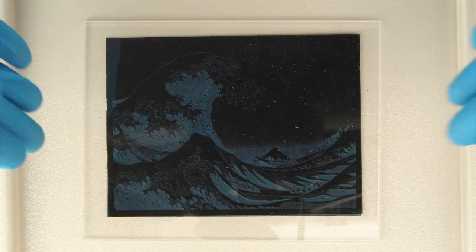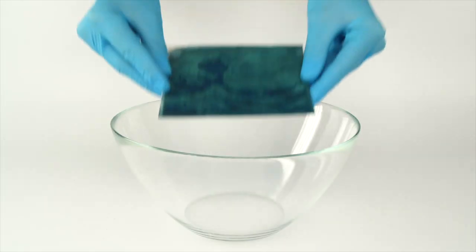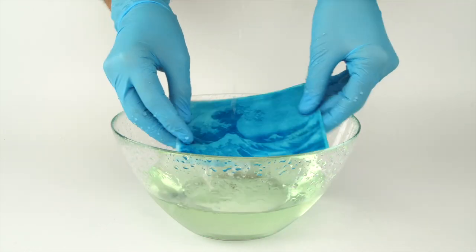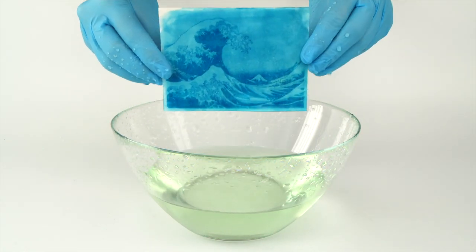Remove the plexiglass and negative. Clean any excess light-sensitive mixture off the paper by rinsing it thoroughly with water. You've made a beautiful blue and white print!